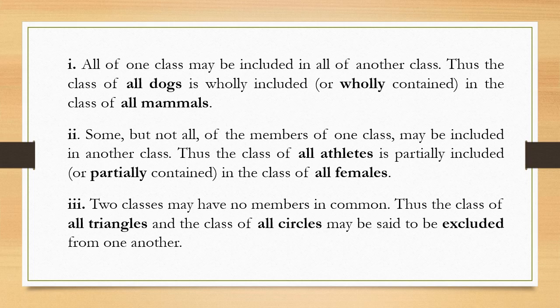Number one: let the two classes be dogs and mammals. In this case we can say all of the class dogs is included or contained in the class mammals, but we cannot say vice-versa — all mammals are not dogs because there are many other creatures who are mammals. So all of one class may be included in all of another class. This is one relation.